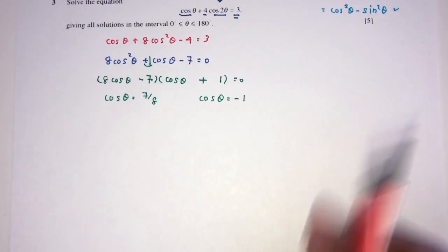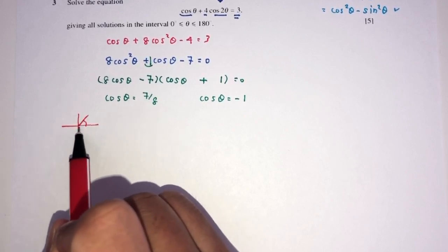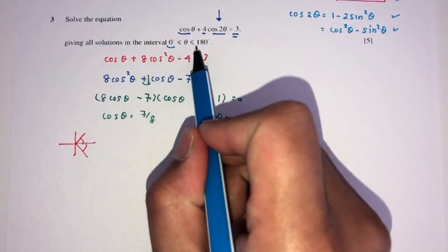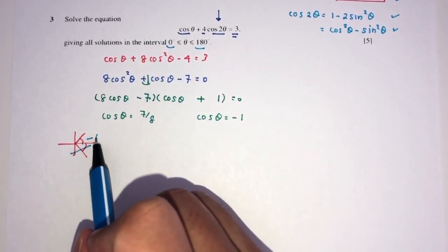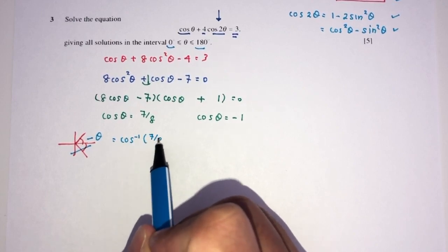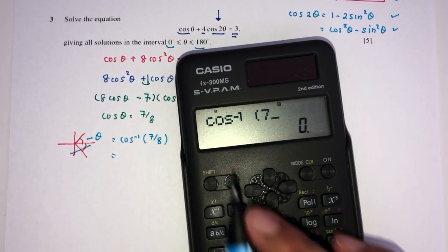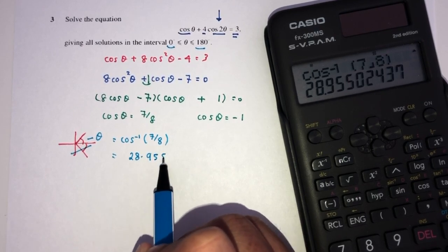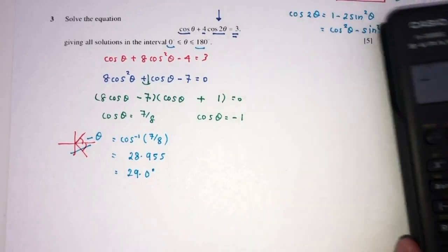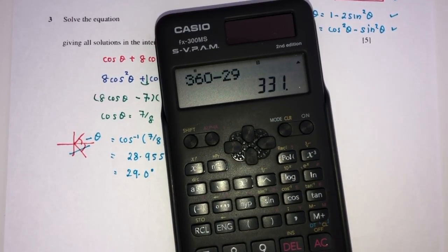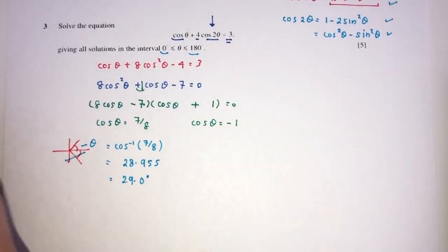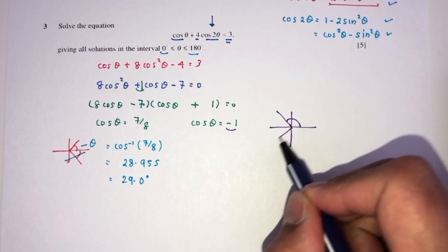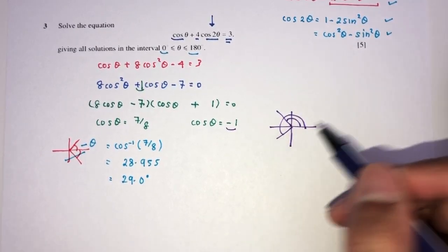For the positive value cosθ = 7/8, it will be in the first and fourth quadrants. Since θ is only between 0 and 180 degrees, there's no need to find the fourth-quadrant solution. So θ = cos inverse of 7/8, which gives 28.955 degrees, approximately 29.0 degrees. The other value from 360 minus 29 would be outside the domain, so it's not needed.